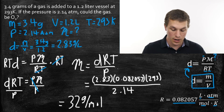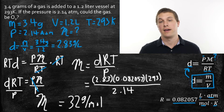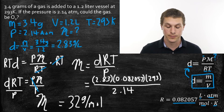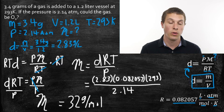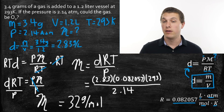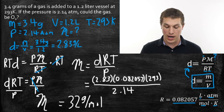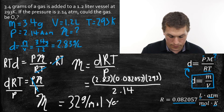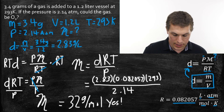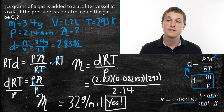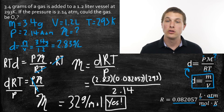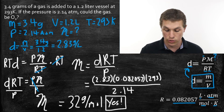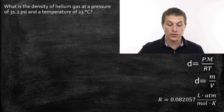Could this gas be oxygen? Since a single oxygen atom has a molar mass of 16 g/mol, two oxygen atoms give O2 a molar mass of 32 g/mol. The molar mass we calculated, 32 g/mol, matches the molar mass of oxygen — so yes, this could be O2. Let's now look at the second common problem type with this density equation.